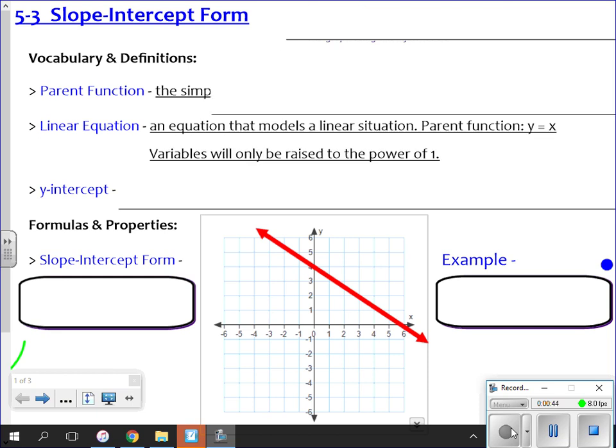But today we are dealing with specifically linear equations. Linear equations are equations that model linear situations, straight lines. The parent function is y equals x. That is the parent function for linear equations. This is the simplest version of a linear equation. Variables will only be raised to the power of one. No squares, no square roots, no absolute values. You have one or two variables, no exponents, no goofy things going on.